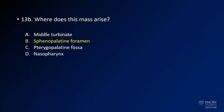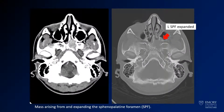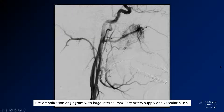This mass arises from the sphenopalatine foramen. In this case, the images show the sphenopalatine foramen — this structure right here — which you can see on the right is normal in size, but on the left is expanded, with a larger AP diameter, and that is where this mass is arising from. On the angiogram, you see large internal maxillary artery branches supplying this region with a significant vascular blush, so the goal will be to reduce that blood flow prior to surgical resection.